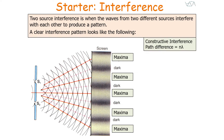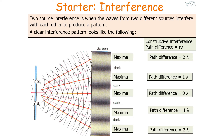For constructive interference, where maxima form, the path difference equals n lambda, where n is any integer. For example, the central maxima has a path difference of zero lambda, whilst the two maxima on either side have a path difference of one lambda, and the next two either side have a path difference of two lambda.